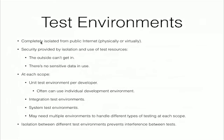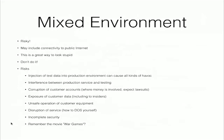For test environments, you want them completely isolated from the public internet, physically or virtually. You may have things in the cloud but should have virtual networks protecting those. Security is provided by isolation and by use of test resources — the outside can't get in and there's no sensitive data in use. At each scope, you want a unit test environment per developer, different integration test environments, and different system test environments. You'll probably need multiple environments because of the different types of testing at each scope. Isolation between different test environments prevents interference between tests. A mixed environment — mixing some portion of test environment with production — is risky and a great way to look stupid. Don't do it.